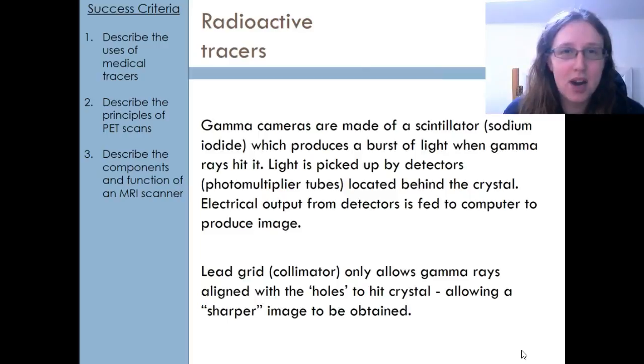In order to focus the gamma rays so that we don't just end up with light hitting everywhere, we have something called a collimator. This is basically just a grid of very long lead tubes that only allows gamma rays that are directly lined up with the tube to hit specific parts of the crystal. It removes the background noise so that you can focus in on the picture.